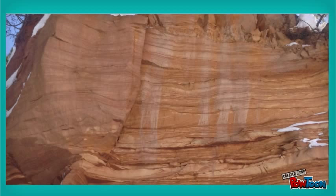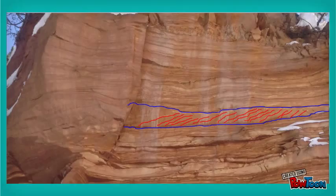Can you see the cross beds? There they are. As you can see, they have tilted layers. These layers can tell us the direction the wind was moving. In this photo, the beds are tilted towards the left.